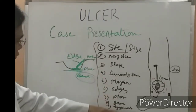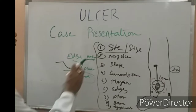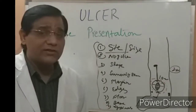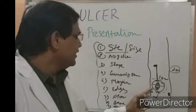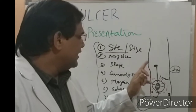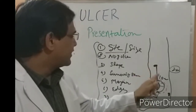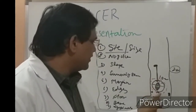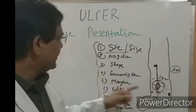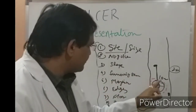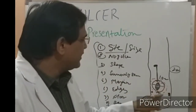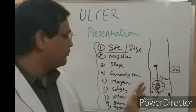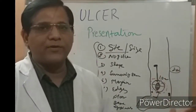In our patient: there is a single ulcer present over the left lower leg, around 10 centimeters below the knee and 4 centimeters above the ankle. It is oval in shape. The surrounding skin is hyperpigmented. The margin of the ulcer is hyperpigmented and there is associated cellulitis.